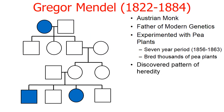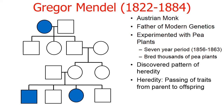Based on his results, which we'll see in a little bit, he uncovered a pattern. And this pattern turned out to be the basics of genetics and heredity — heredity being the passing of traits from parent to offspring. So let's talk about his work.